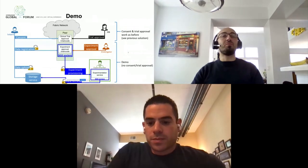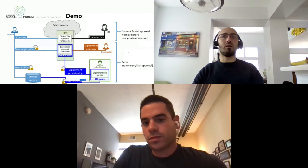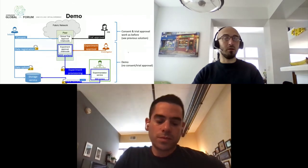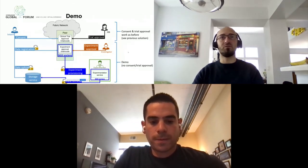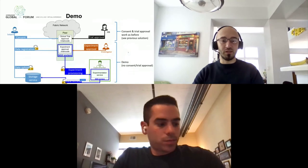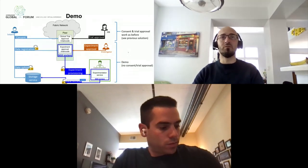We prepared a demo with this architecture. You know the parties involved in the Fabric network. Essentially, there are two chaincodes: the regular one that takes care of consent and trial approval, and the FPC chaincode, which manages the policies related to data protection and release for that trial.